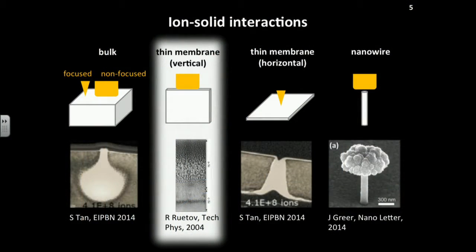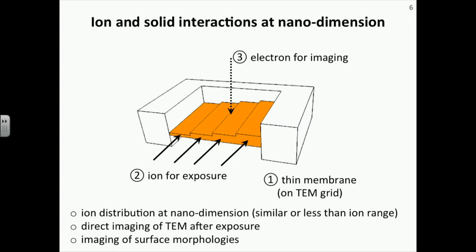In order to understand and make modifications of nanostructure by ion irradiation, we need to understand how the ion moves and behaves inside a solid — the interaction. There are examples people have used to study ion-solid interaction using focused or non-focused ion beam: for the vertical thin membrane, for the horizontal thin membrane, for the nanowire. Among these methods, we chose the vertically stacked thin membrane method, because it allows direct imaging right after focused helium ion beam irradiation. We slightly improved this method by incorporating focused helium ion beam technology.